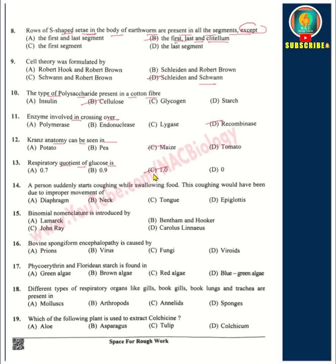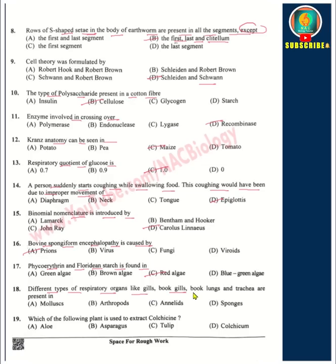Kranz anatomy can be seen in maize. The respiratory quotient of glucose is option C — 1. A person who suddenly starts coughing while swallowing food: this coughing is due to improper movement of the epiglottis. Binomial nomenclature was introduced by Carolus Linnaeus. Bovine spongiform encephalopathy is caused by prions. Phycoerythrin and floridean starch are found in red algae. Different types of respiratory organs like gills, book lungs, and trachea are present in arthropods.